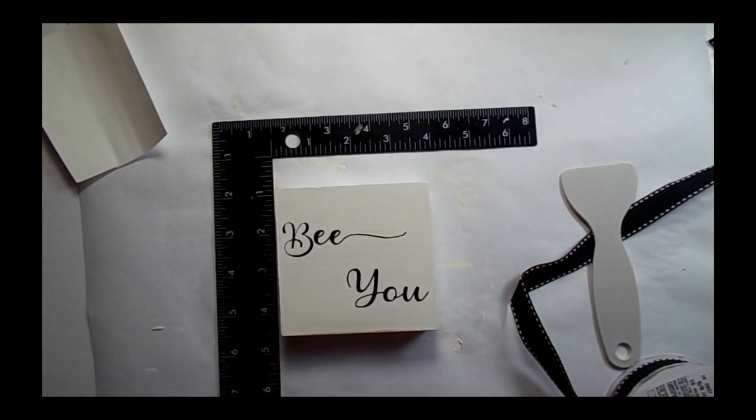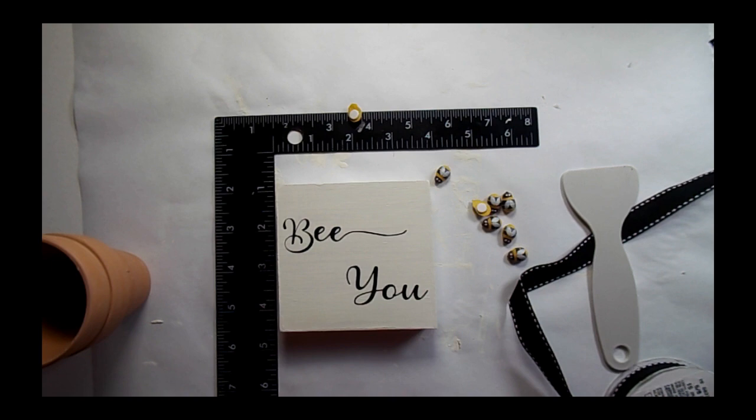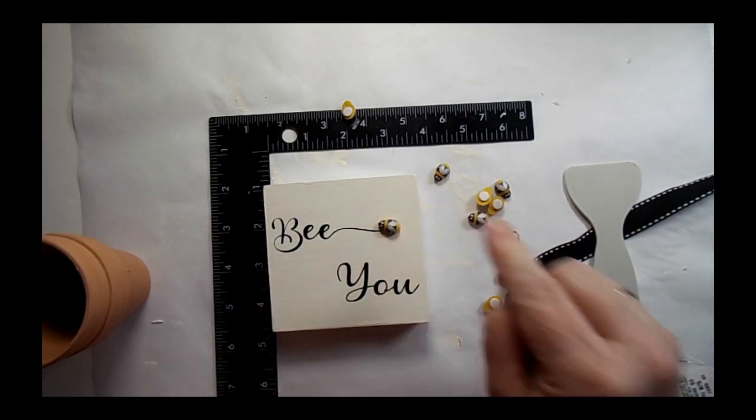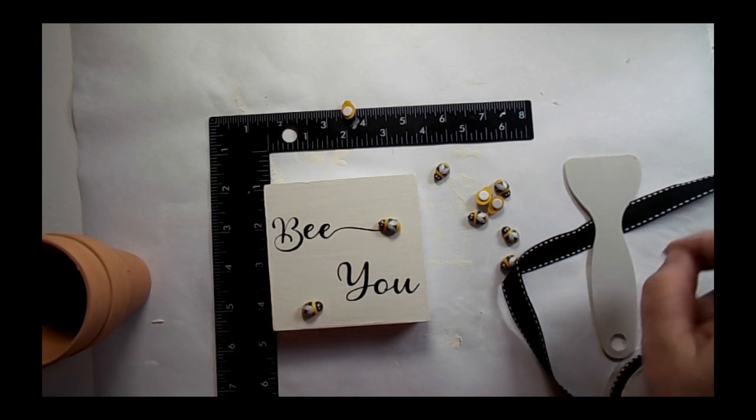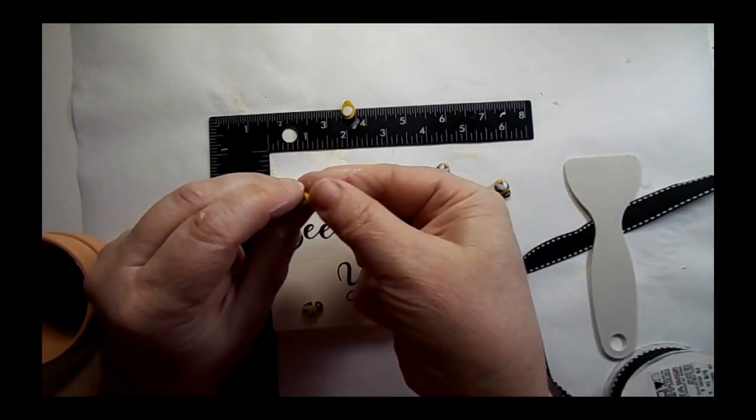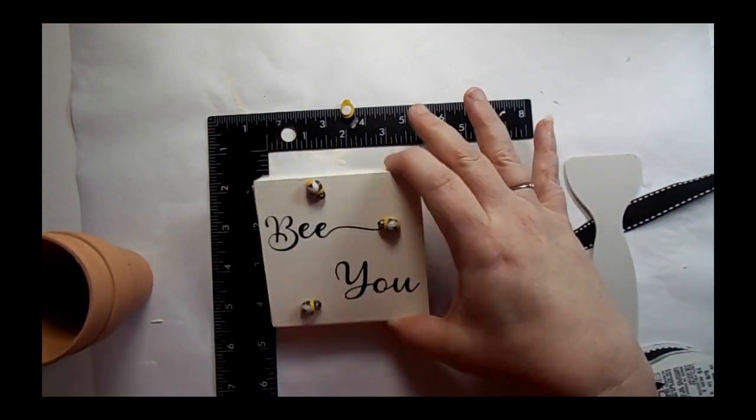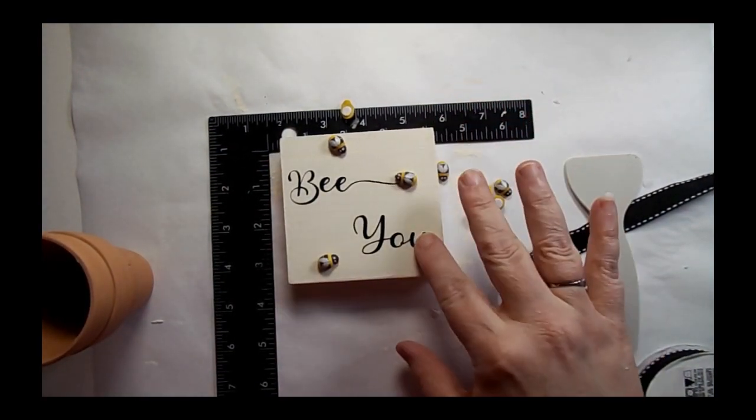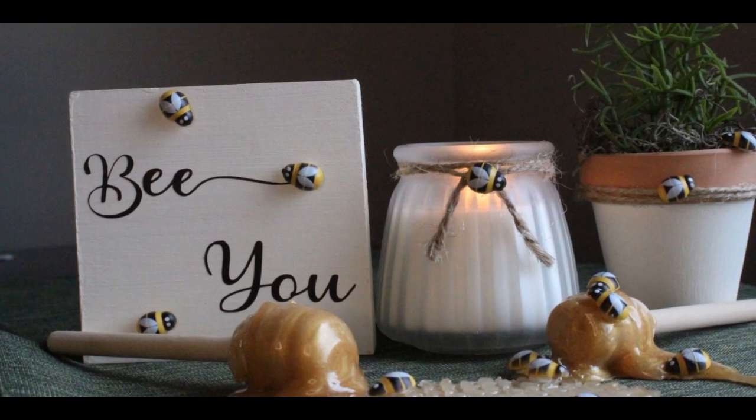This wood just grips it really easily, so I just rubbed that with my fingers. I decided to add several of these bees. Now again, in my description box below will be all of the supplies I use. These have little stickers on the back and they stick rather well, so I just peeled them off and stuck them on there. Another quick one for your tiered tray.